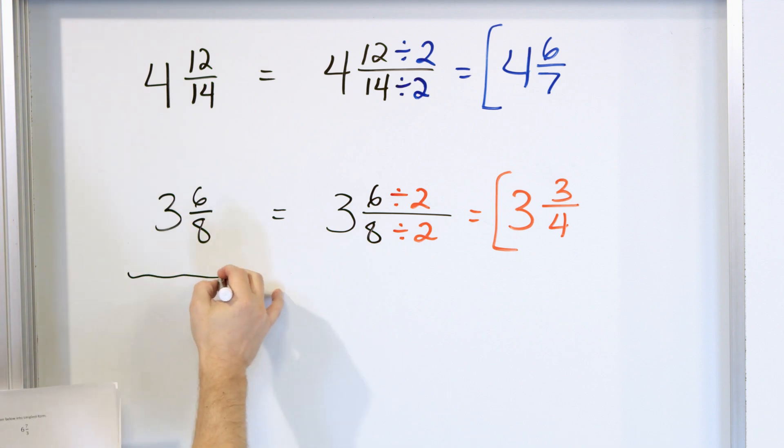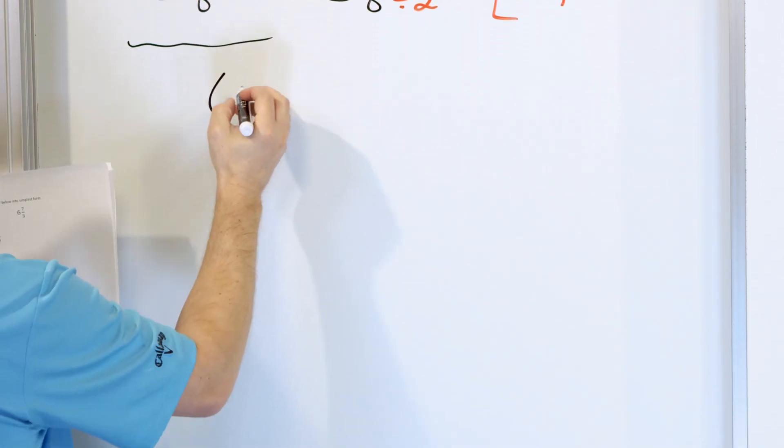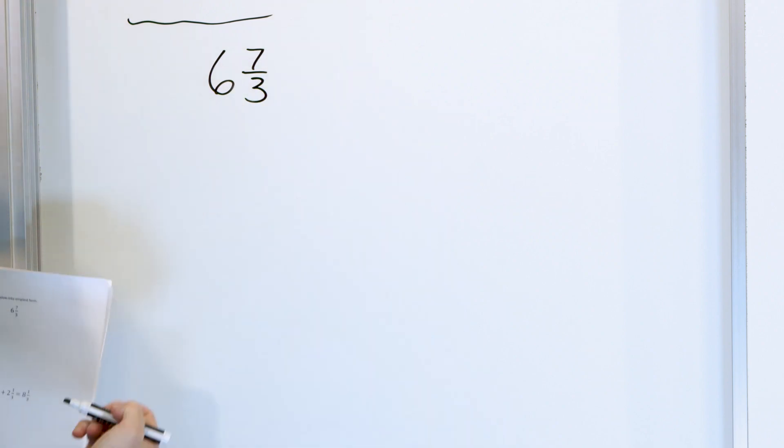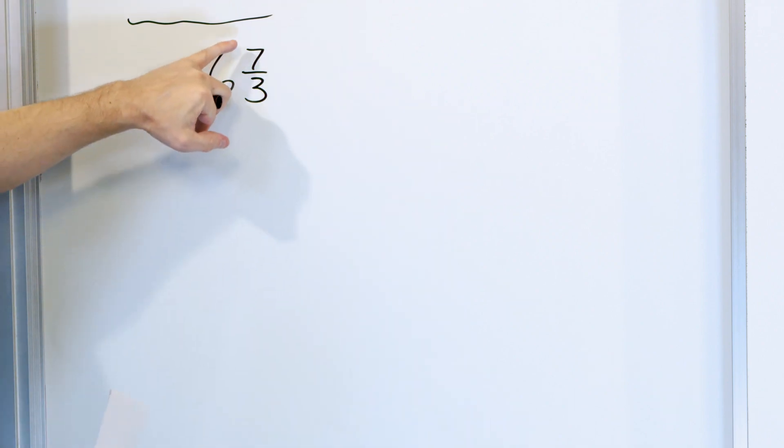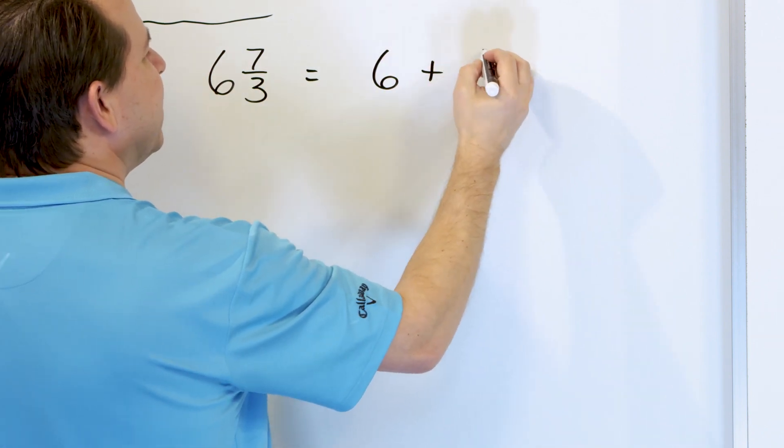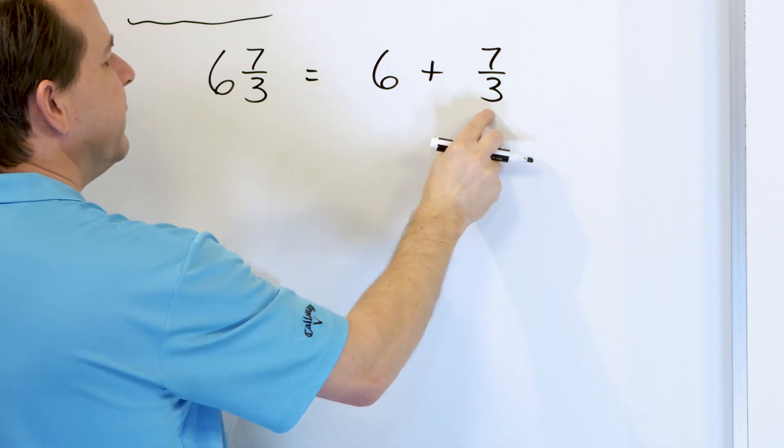Let's take something a little more challenging. Let's take a look at 6 and 7/3rds. The 7 and the 3, we can't divide top and bottom to simplify, but we notice that this is an improper fraction. The numerator is bigger than the denominator, so this is basically like 6 plus whatever 7/3rds comes out to be.